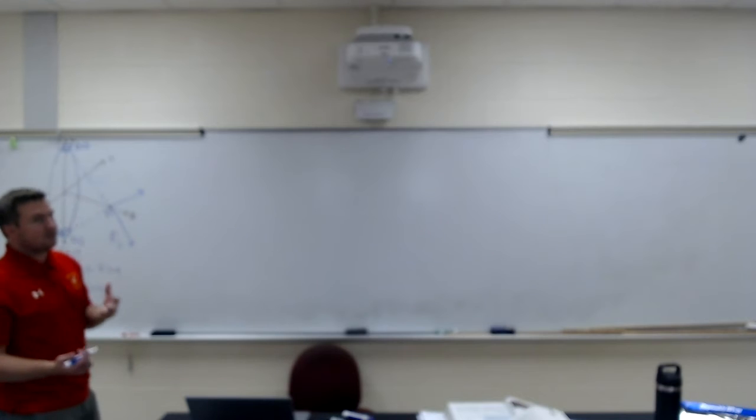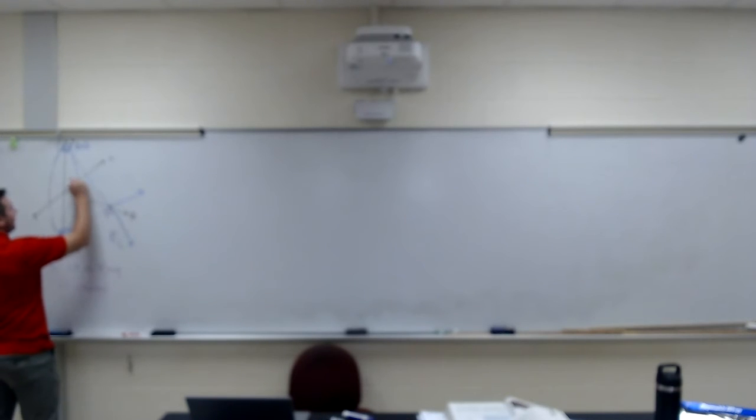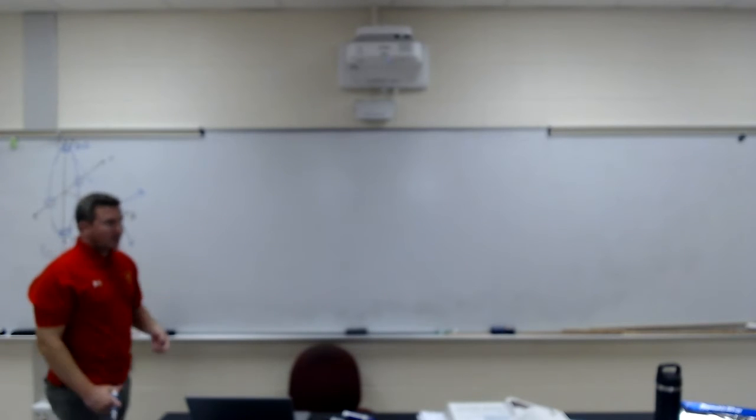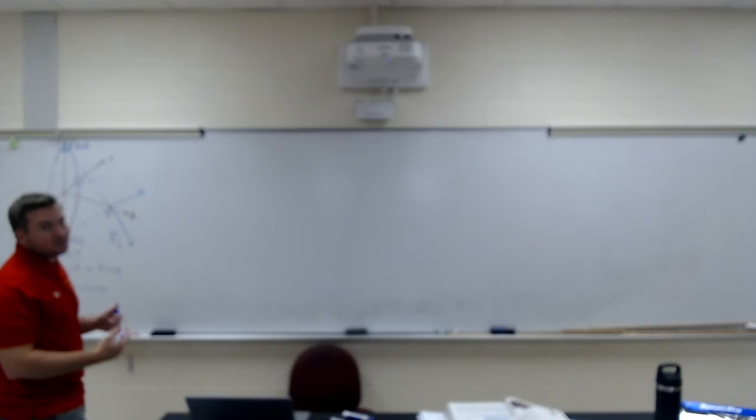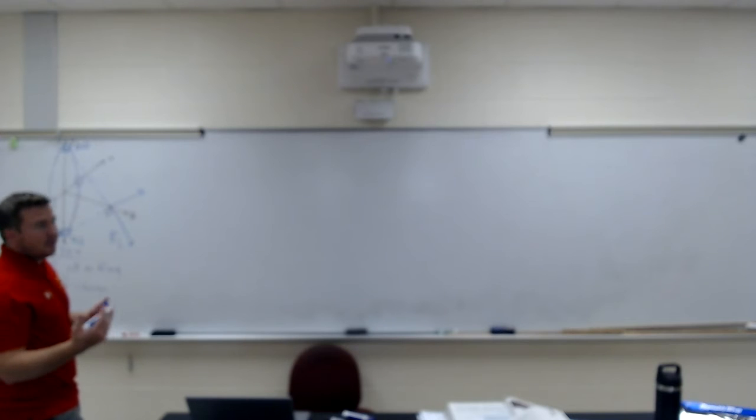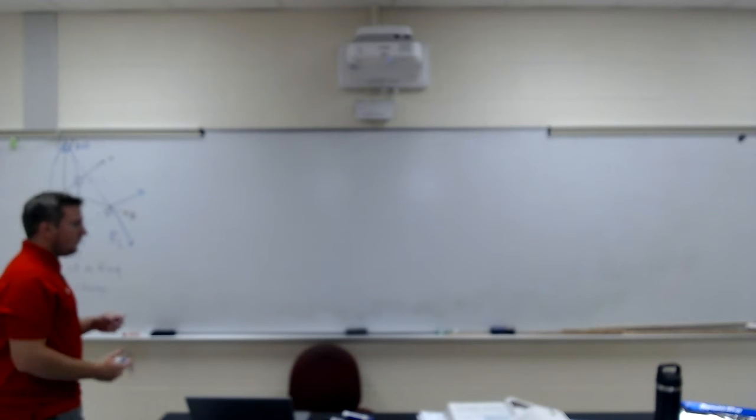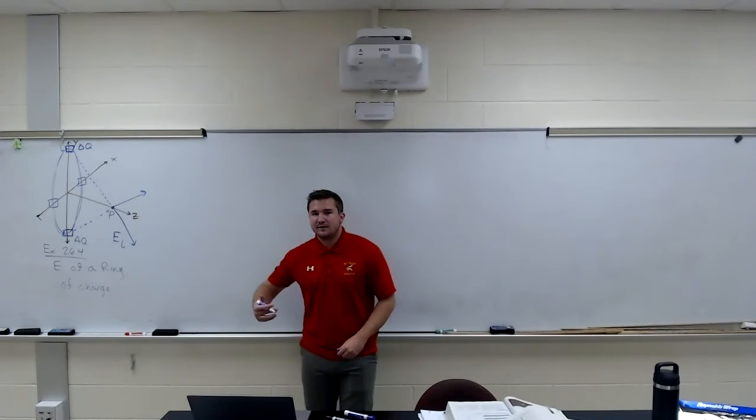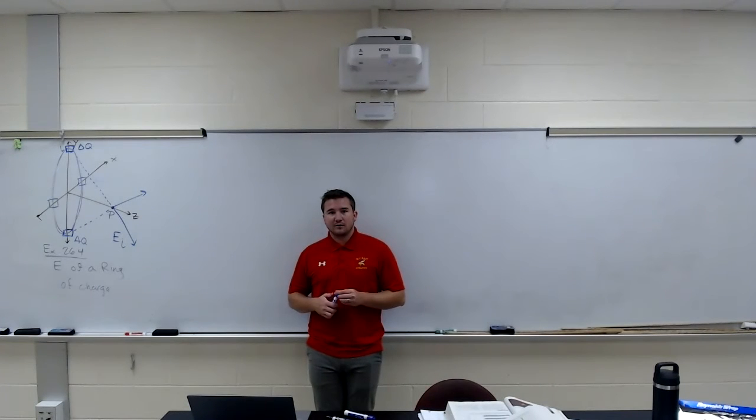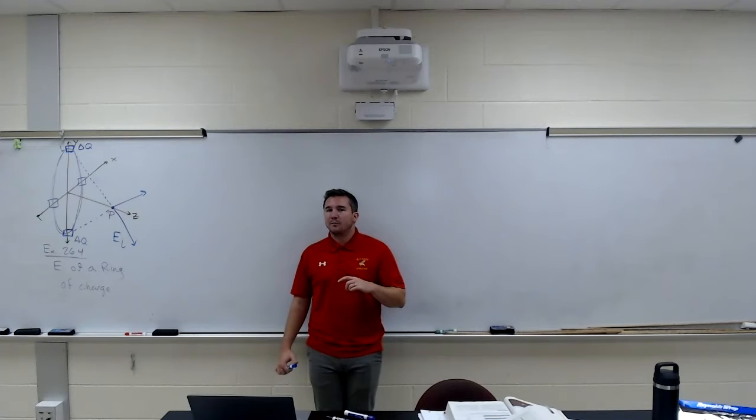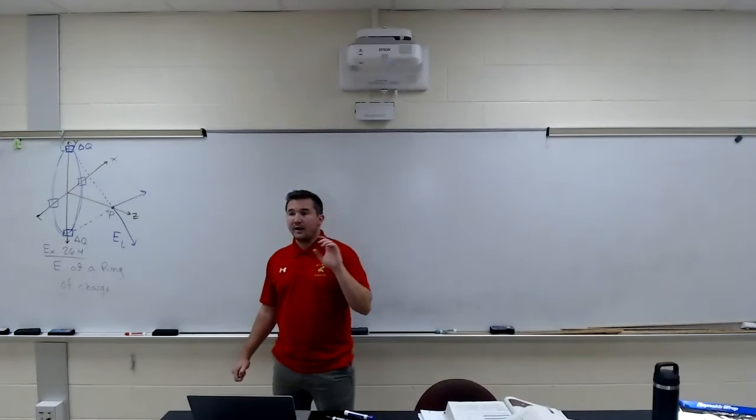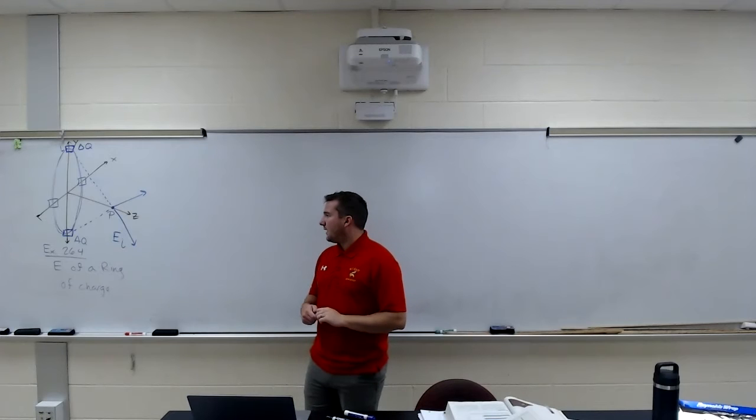which means our Y components cancel. We could check a couple other spots. Maybe the X axis here and the X axis here. If we compare the electric field created by those, we should see that the X axis cancels where the Z axis adds on. Based on that, we know that this problem is going to simplify to just the Z components of our electric fields. The X components and Y components are going to cancel out because all around the circle they have an opposite, a symmetrical opposite that will cancel them out.